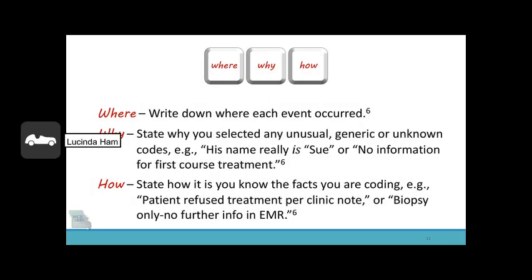Where, why, and how. Where: write down where each event occurred. Why: state why you selected any unusual, generic, or unknown code — such as his name really is Sue. How: state how you know the facts you are coding; for example, patient refused treatment per clinic note. Include only information that the registry is authorized to collect — you do not need to record drug use, for example. Think about HIPAA.